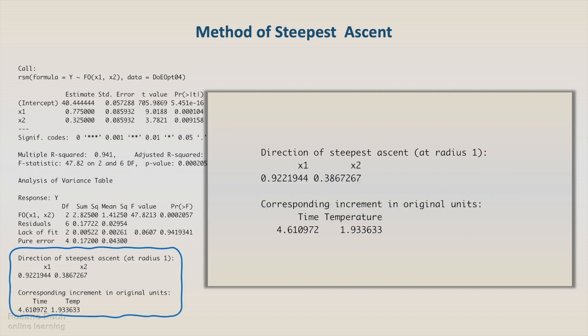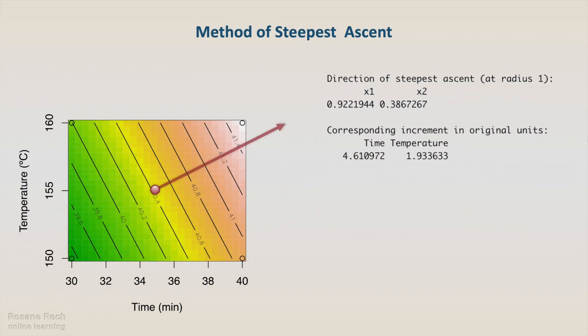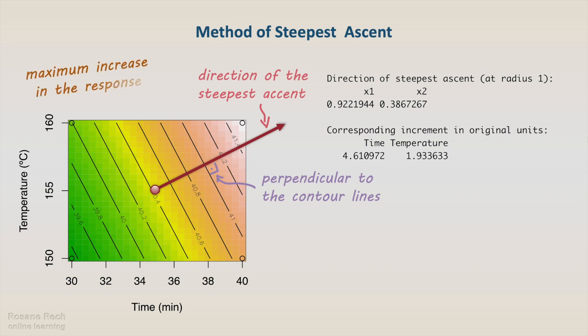And the direction of the steepest ascent. In the contour plot, the direction of the steepest ascent is perpendicular to the contour lines. It indicates the direction of the maximum increase in the response.